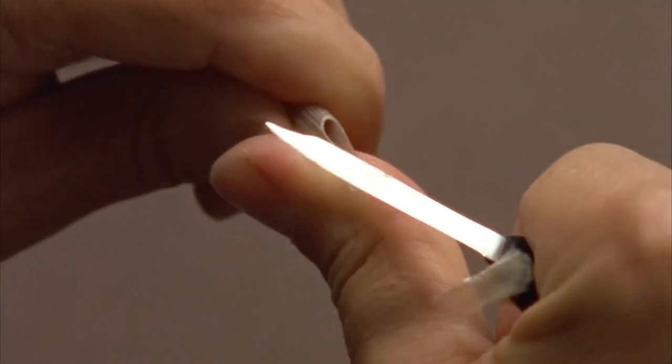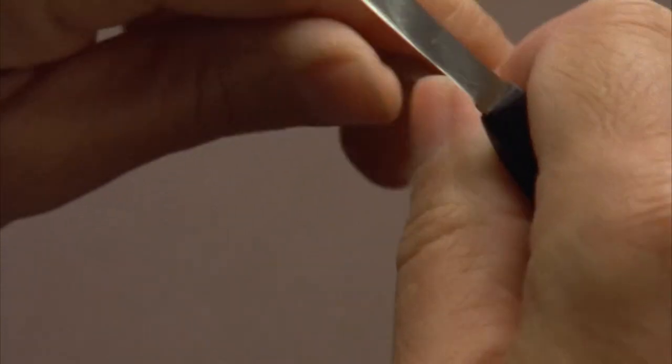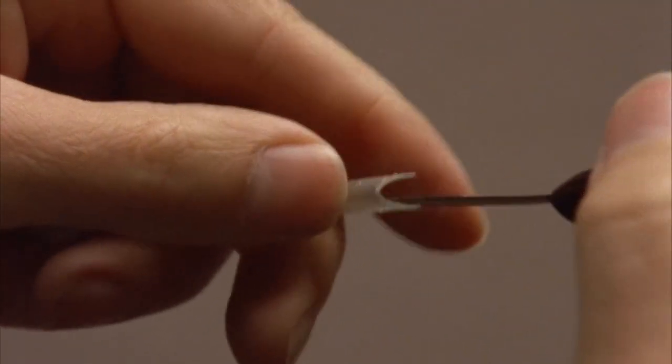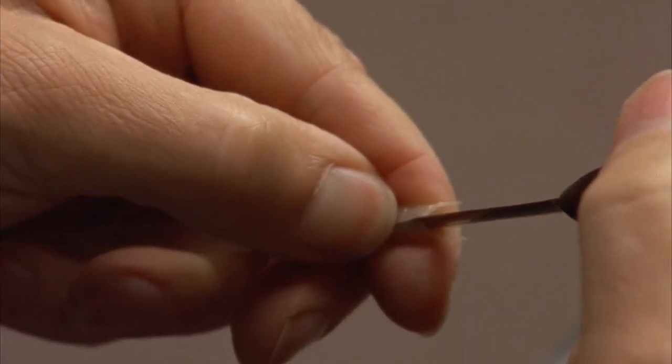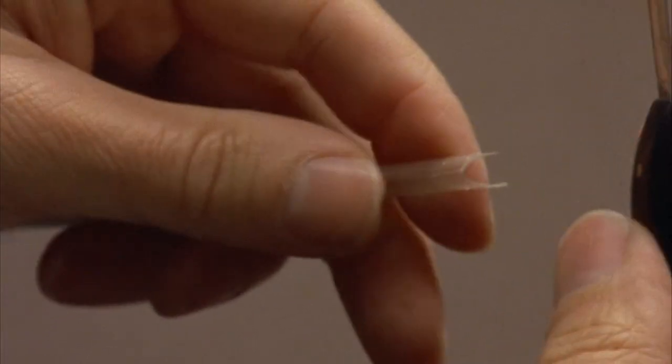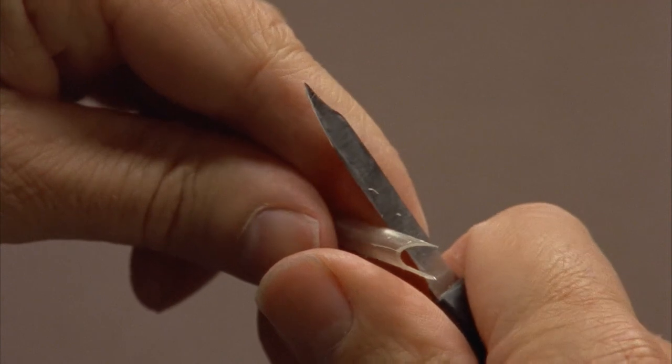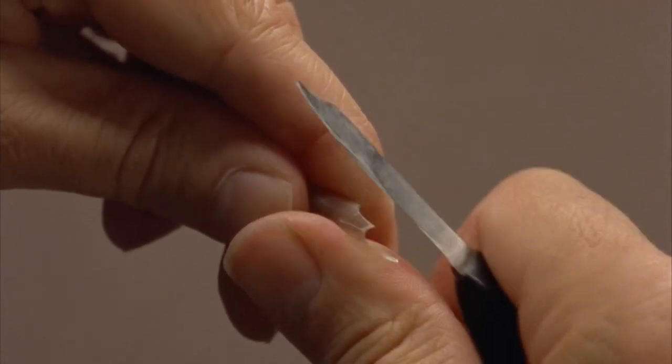The scribe carved the quill to a rough point, cut a slit to draw ink down, then trimmed the point to the proper width. The shape of the quill point varied with the style of the lettering being copied.